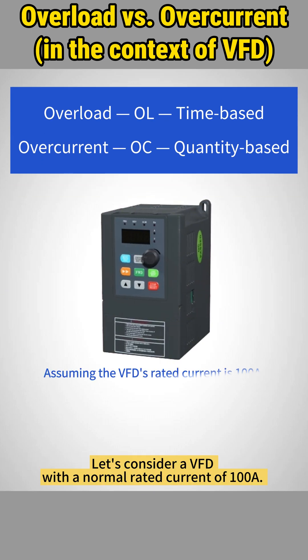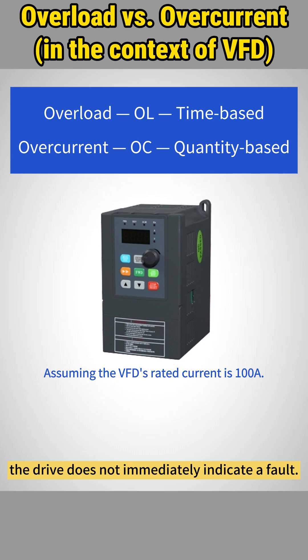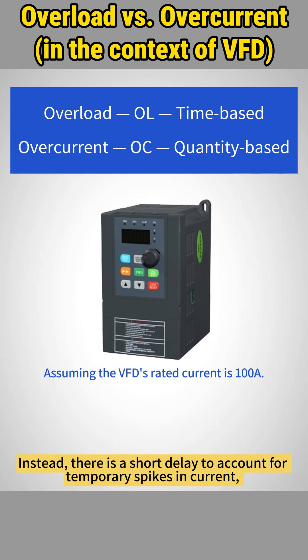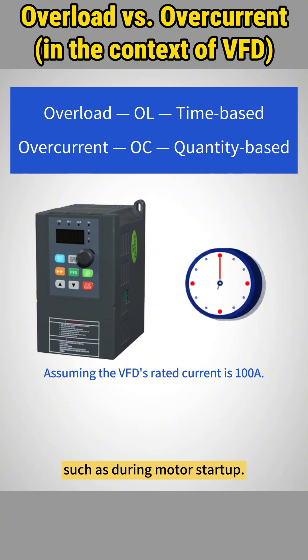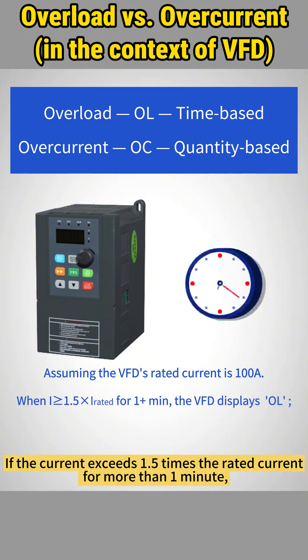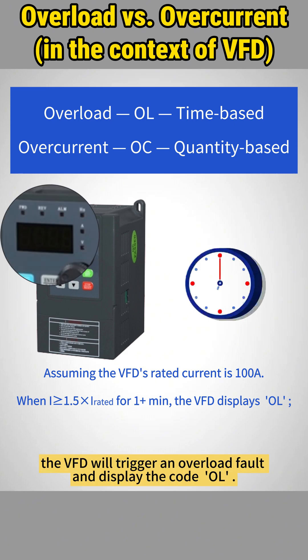Consider a VFD with a normal rated current of 100 amps. When the current flowing through the VFD exceeds the rated value, the drive does not immediately indicate a fault. Instead, there is a short delay to account for temporary spikes in current, such as during motor startup. If the current exceeds 1.5 times the rated current for more than one minute, the VFD will trigger an overload fault and display the code OL.